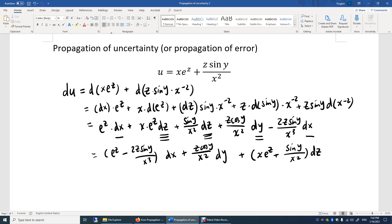To determine the uncertainty of u, we need to make two assumptions. The first assumption is that x, y, and z are independent of each other.